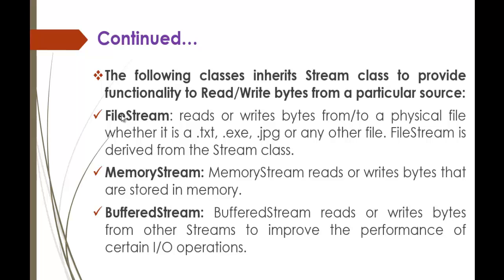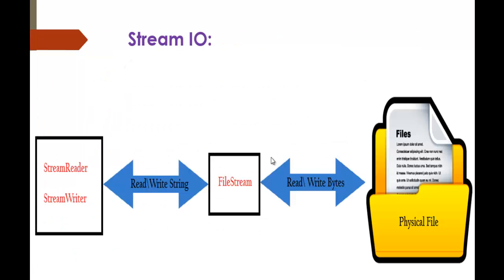For example, we have a FileStream class, and what it does is it reads or writes bytes from or to a physical file — whether it is a .txt, .exe, .jpg, or any other file. FileStream is derived from the stream class. To understand it more clearly, I have an image which explains that.